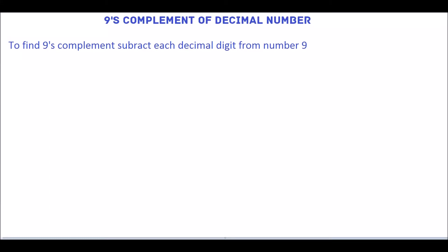In this tutorial, we will see 9's complement representation of decimal number. To find the 9's complement, we have to subtract each decimal digit from number 9. We will explain this with few examples.